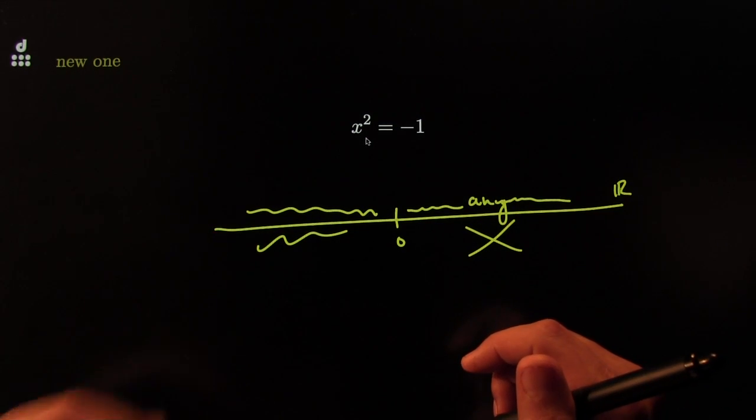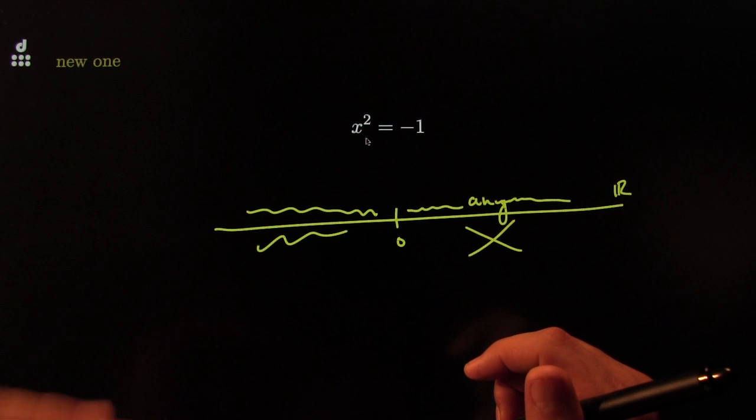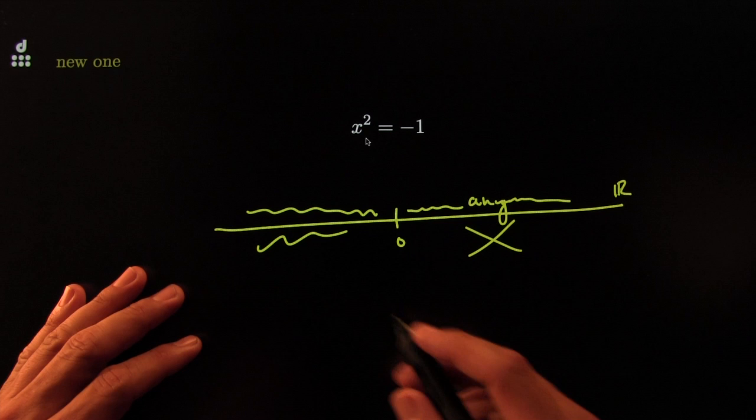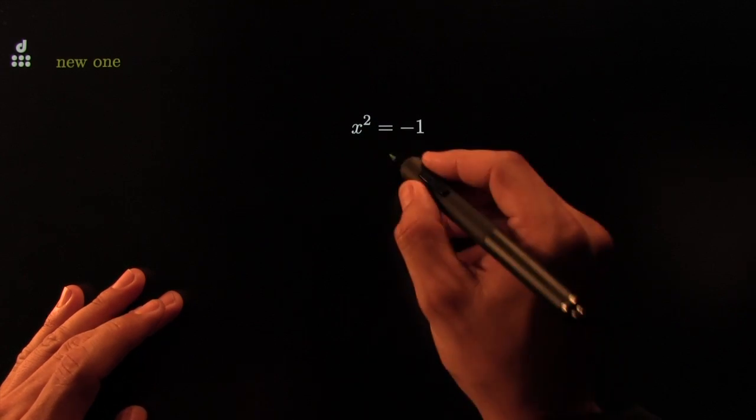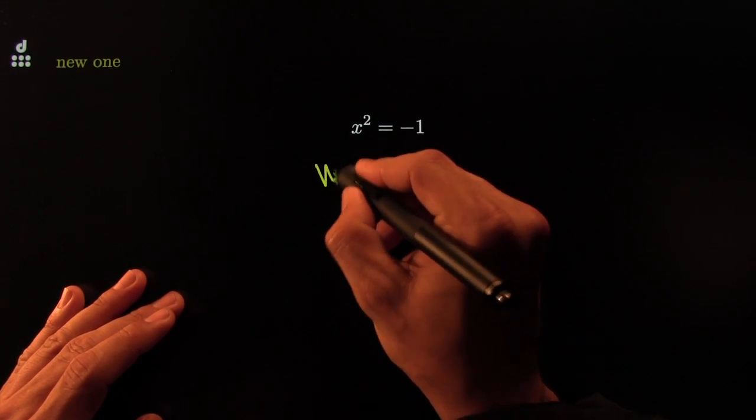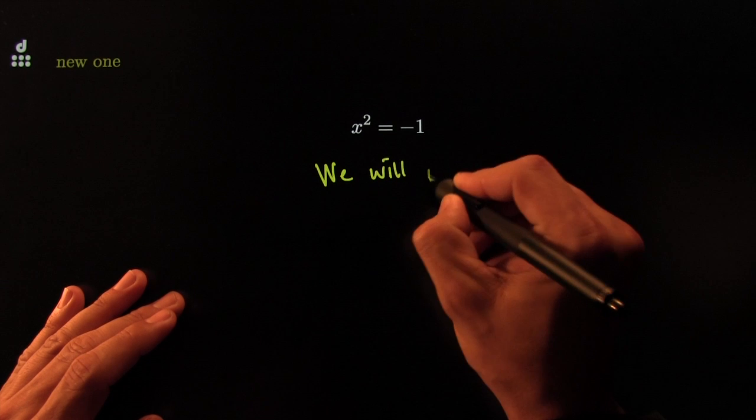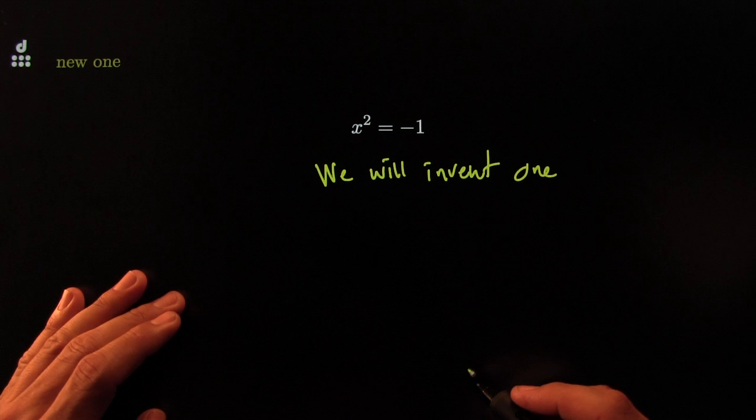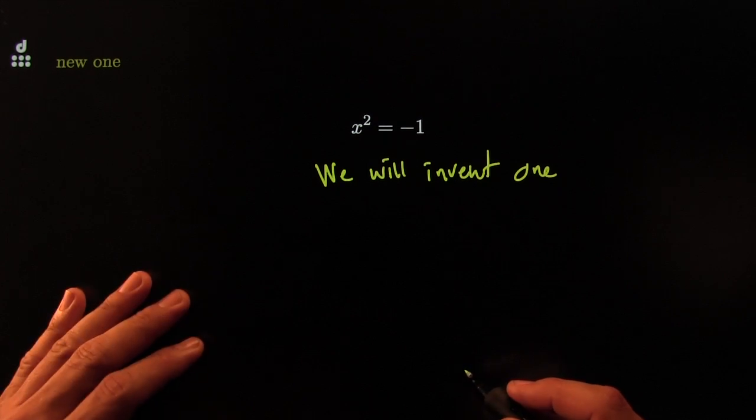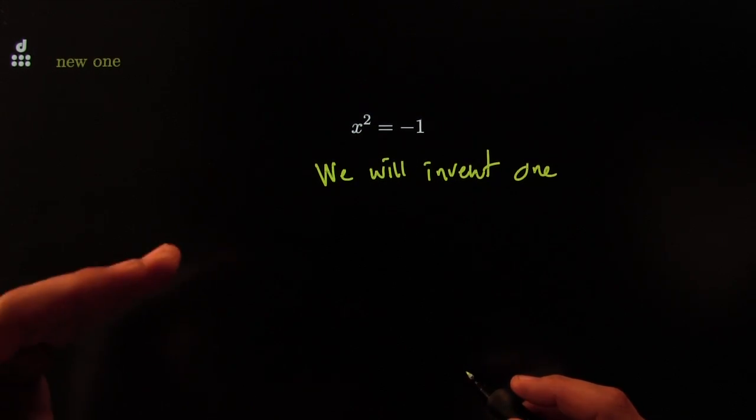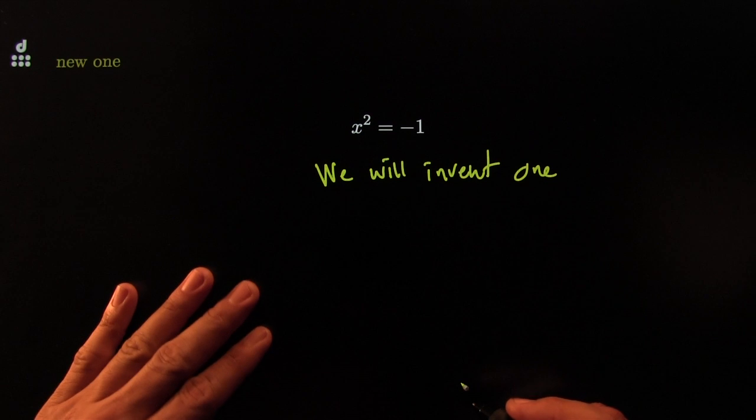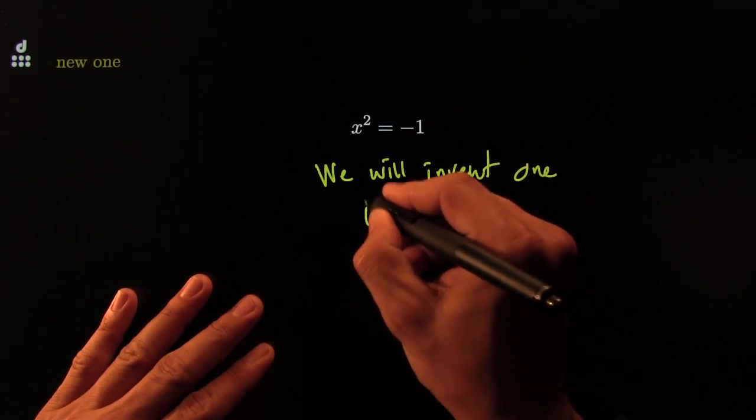Well, for monkeys, but not for humans. Because we've got a 3.5 pound brain with which we do miracles. Here's what we did on this one. On this one, we said, you know what? There is no solution. So we will invent one. That's it. We will invent one. How audacious is that? Audacity and more audacity. We just invented one.